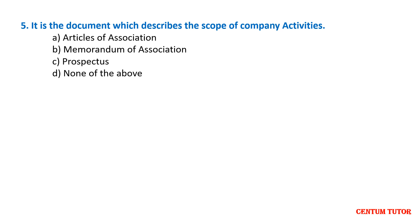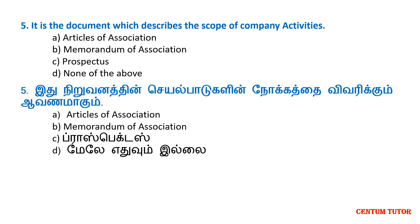Question on minimum number of members required. Options: Article of Association, Memorandum of Association, Prospectors, None of the above. The answer is Memorandum of Association, as it specifies the minimum number of members required.